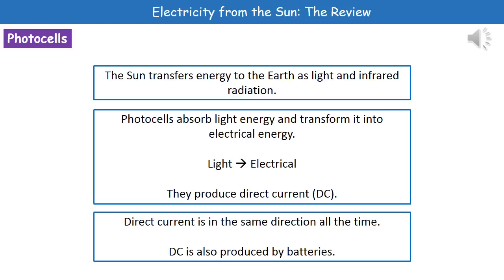The sun is going to transfer energy to earth as light and as infrared radiation. What a photocell actually does is it absorbs the light energy and transforms it into electrical energy. As a result of this transformation they produce this thing called direct current, or DC.